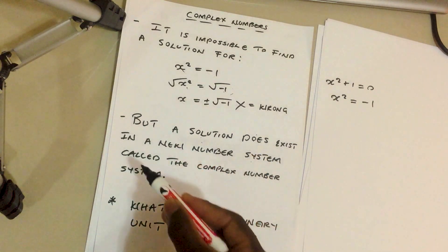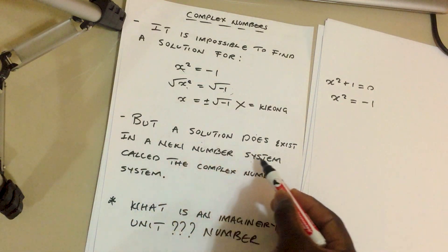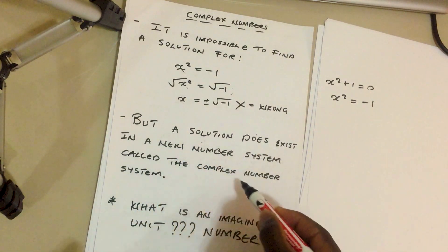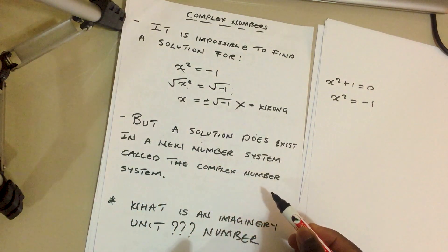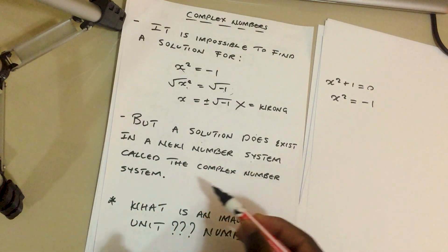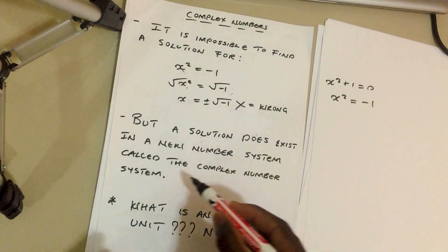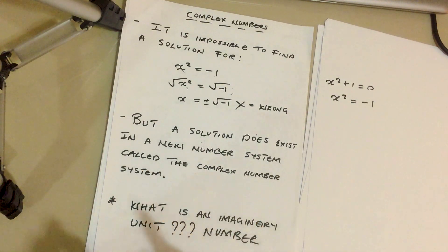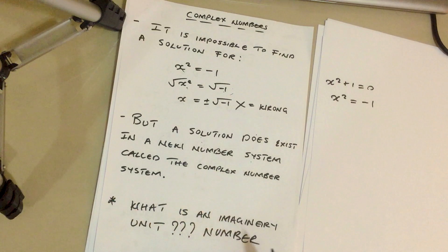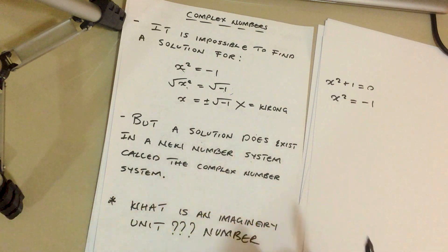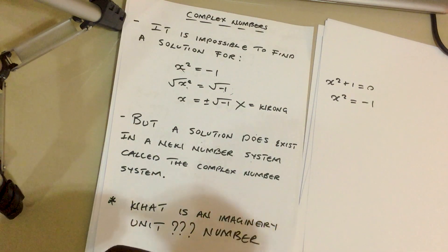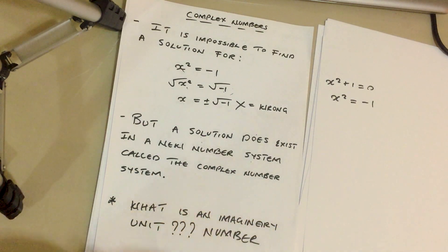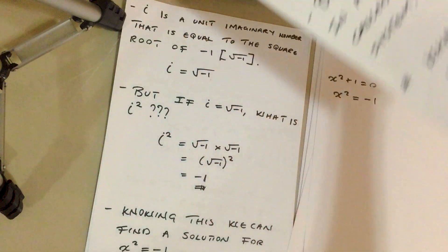But a solution does exist in a new number system called the complex number system. In order to know what exactly this complex number system is, we need to understand what a unit imaginary number is. We can go to the next page to understand that.